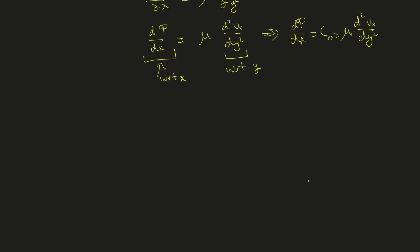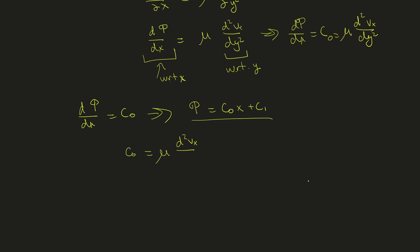Starting with the easy equation, dP/dx = c0. Integrating gives pressure = c0*x + c1. We'll use boundary conditions to determine these constants. We also have c0 = mu * d²vx/dy².